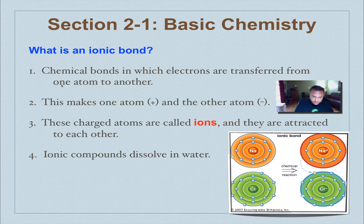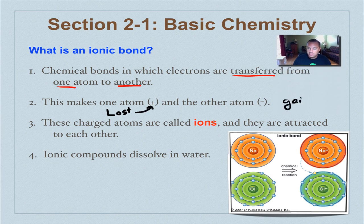All right, so ionic bonds. An ionic bond occurs when electrons are transferred from one atom to another. Now what this will do is, when you transfer an electron, in other words one atom has given its electron to another—one gave and one received—the one that lost the electron will become positive.